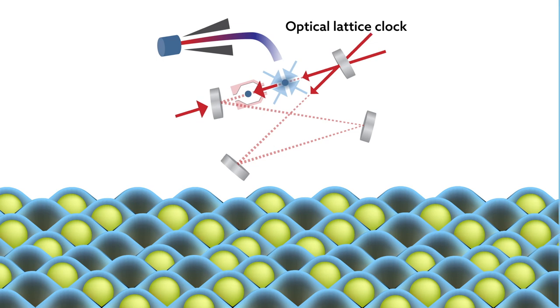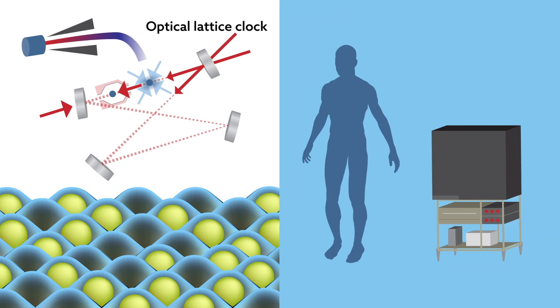Clocks of this type are big enough to fill a small room, making it difficult to take measurements at two separate locations. The team, led by Riken, overcame that problem by miniaturizing their clocks to fit inside cabinet-sized boxes.